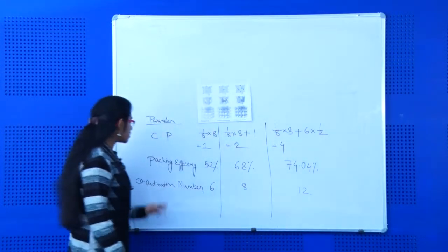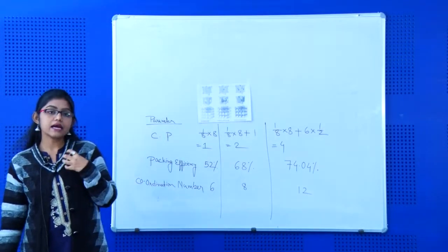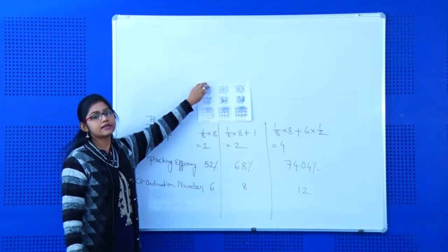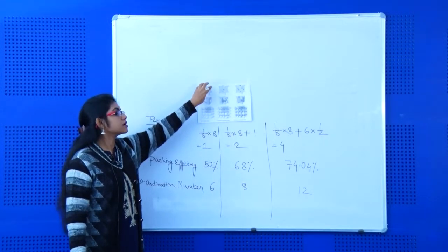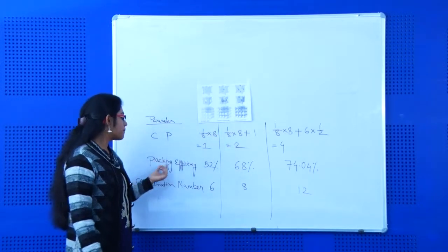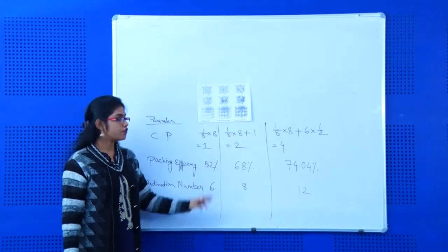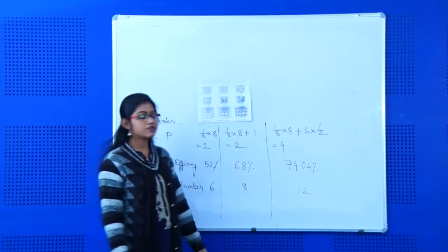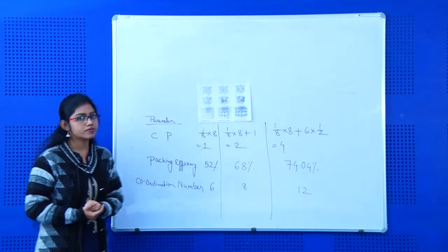Packing efficiency means how much of the cubic unit cell is filled with constituent particles. The packing efficiency is 52% for simple cubic, 68% for body centered cubic, and 74.04% for face centered cubic.